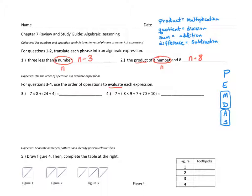On question three, I start by looking for parentheses — and I have some. I'll underline the part I'm going to do first. 24 divided by 4 is 6. I rewrite every other term of the expression and continue following the order of operations. No more parentheses, no exponents, so I look left to right for multiplication or division. The first one I see is multiplication: 7 times 8 is 56. Then 56 plus 6 is 62.